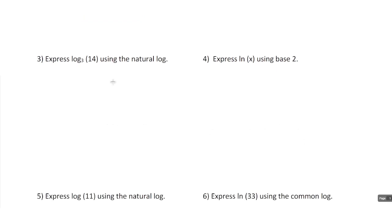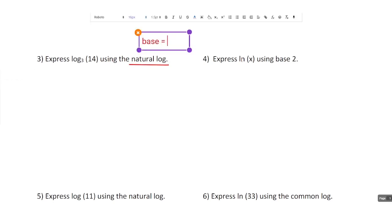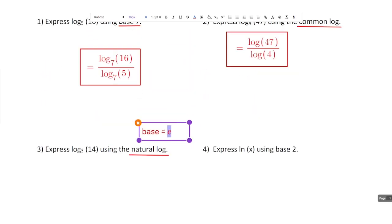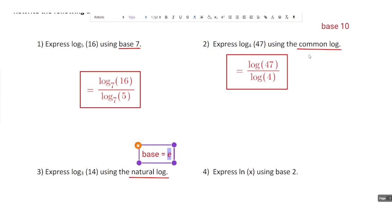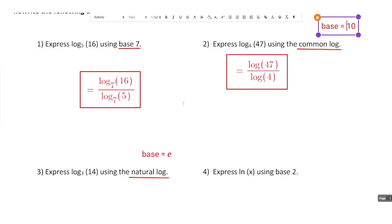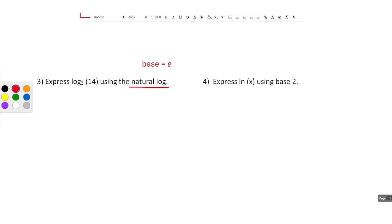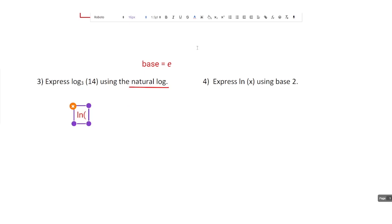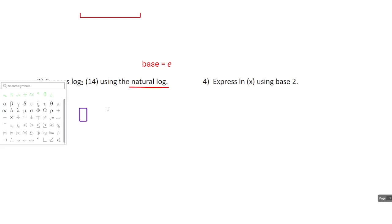Number 3 says express log base 3 of 14 using the natural log. The natural log is where our base is Euler's number e — it's about 2.71 but it's an irrational number like pi or root 2, so we just leave it as e. These are our two special bases. If it's Euler's number e, we use ln for natural log, which is basically the same as log base e. So here we have the natural log of 14 divided by the natural log of 3.